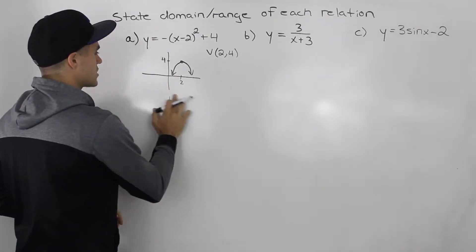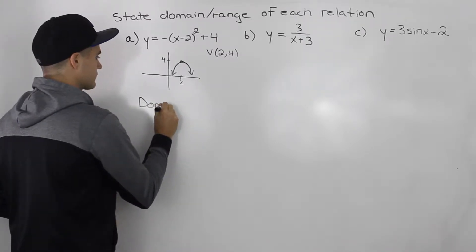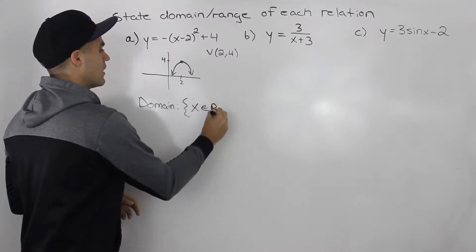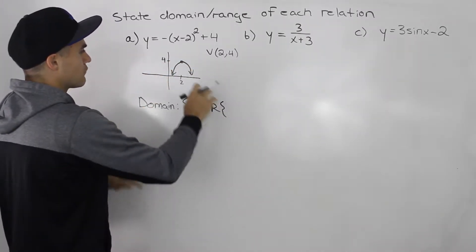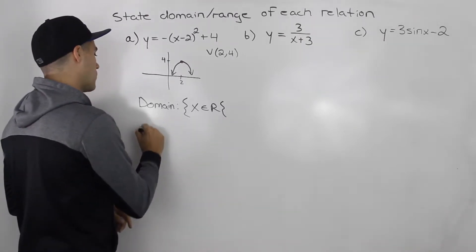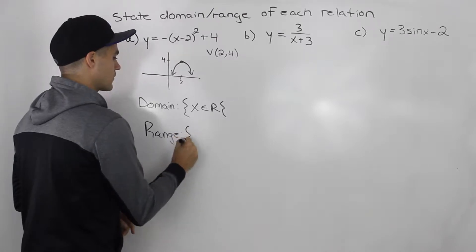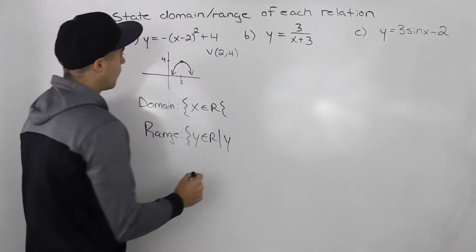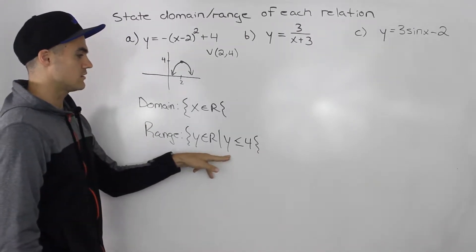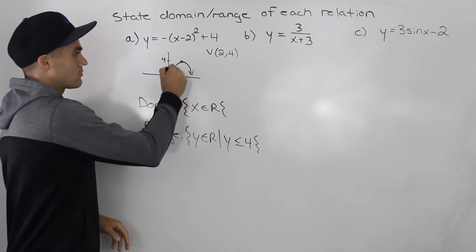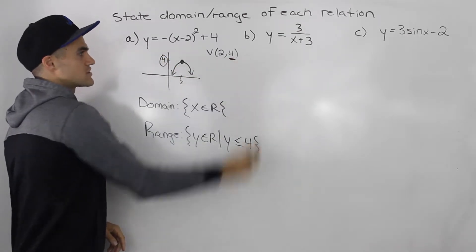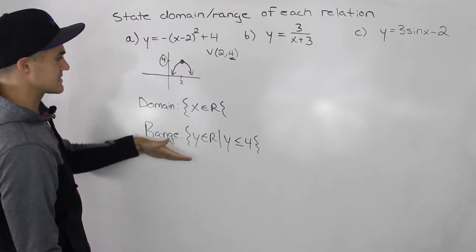The domain of this relation is going to be x is an element of real numbers, because the parabola just keeps going on forever and every x value gets hit — so there's no restriction on the domain. For the range, there's always a restriction: y can be an element of real numbers, however y has to be less than or equal to 4. The restriction on the range for a parabola depends on whether it's opening up or down and on the y value of the vertex.